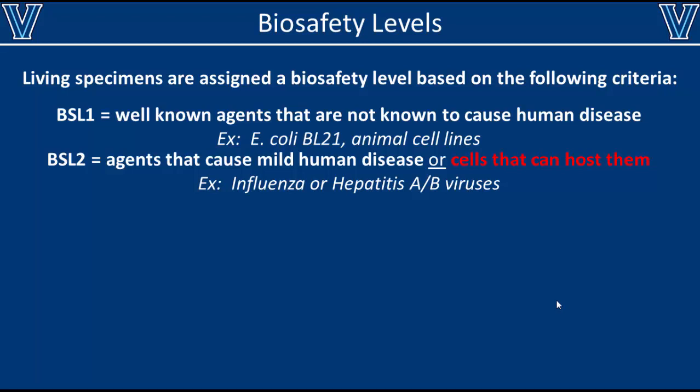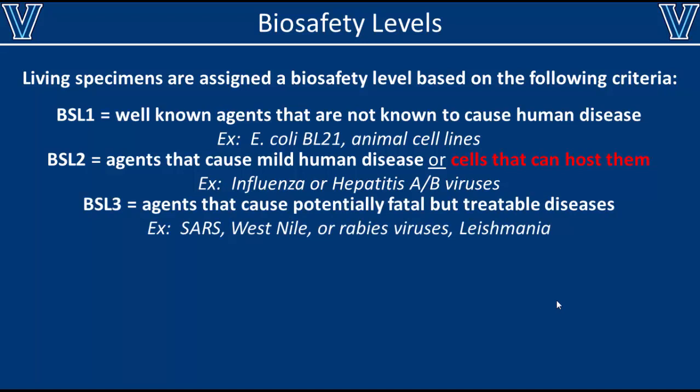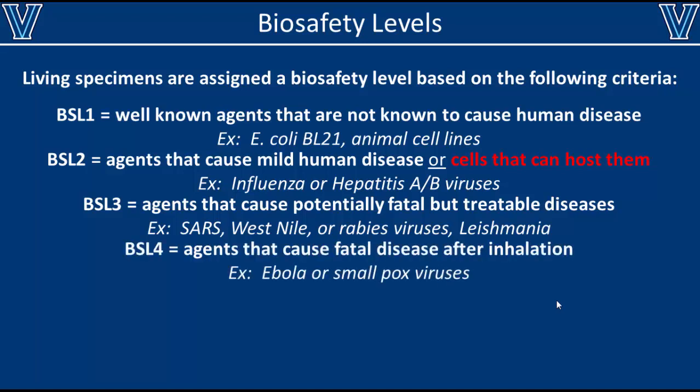Therefore, if you're culturing human cancer cells, even though they are not directly pathogenic, they still have the potential to host more serious pathogens, so they are classified as BSL-2. However, animal cell lines are still BSL-1. BSL-3 agents include diseases that are potentially fatal but treatable — for example, SARS, West Nile, and rabies viruses. More serious viruses that are not treatable and often fatal, like Ebola or smallpox, are classified as BSL-4.